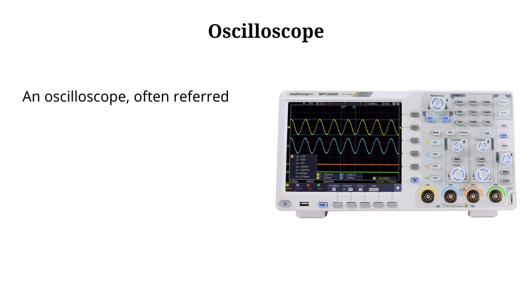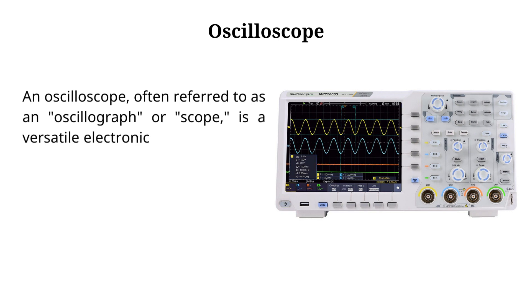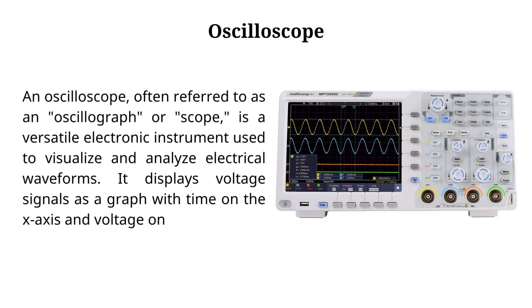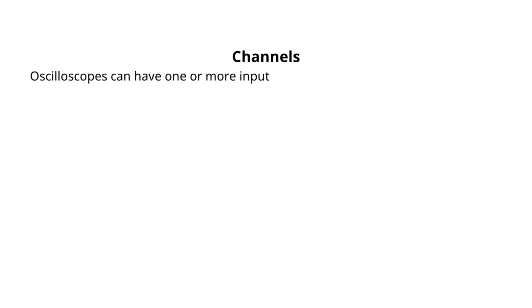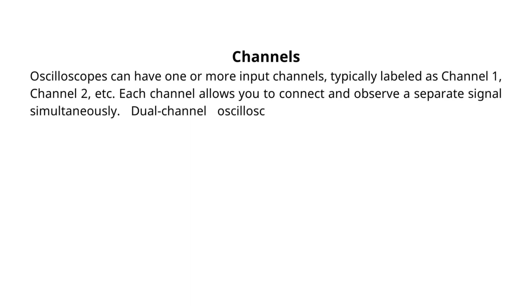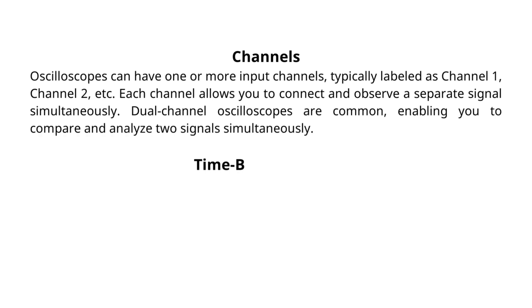An oscilloscope, often referred to as an oscillograph or scope, is a versatile electronic instrument used to visualize and analyze electrical waveforms. It displays voltage signals as a graph with time on the x-axis and voltage on the y-axis. Oscilloscopes can have one or more input channels, typically labeled as channel 1, channel 2, etc. Each channel allows you to connect and observe a separate signal simultaneously. Dual-channel oscilloscopes are common, enabling you to compare and analyze two signals simultaneously.